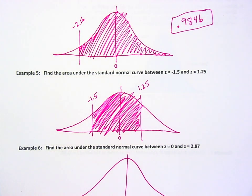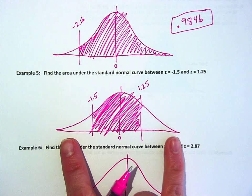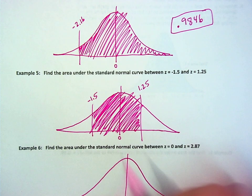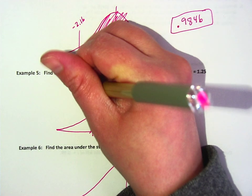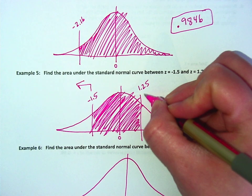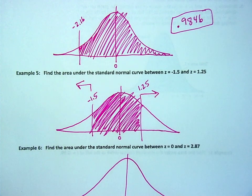So, ideas. You could find everything to the left of 1.5 and everything to the right of 1.25 and subtract them? Yeah, that's possible. So one way, what Mason is suggesting is that we look up this one to the left, figure out this one to the right, and subtract them from 1. That is definitely a possibility. There's another way to do it. That would work.